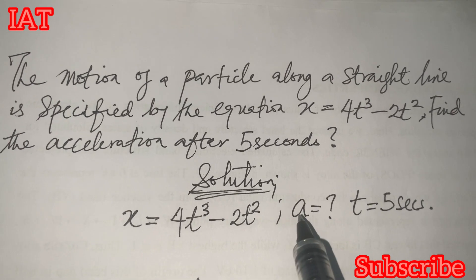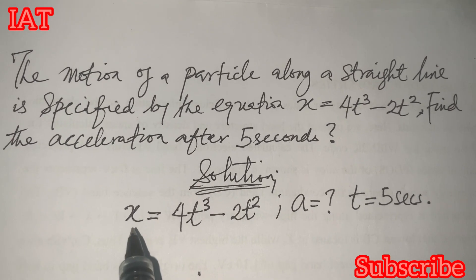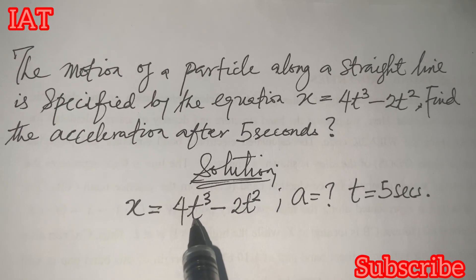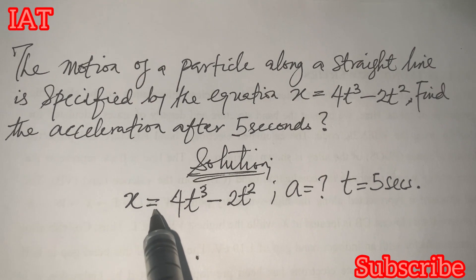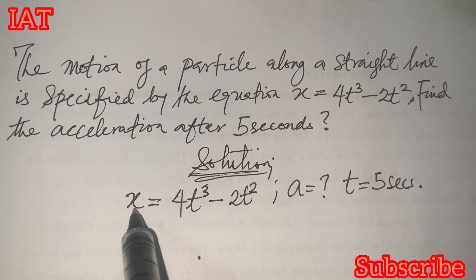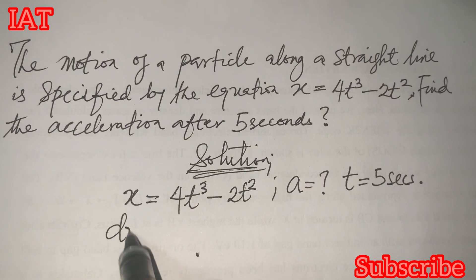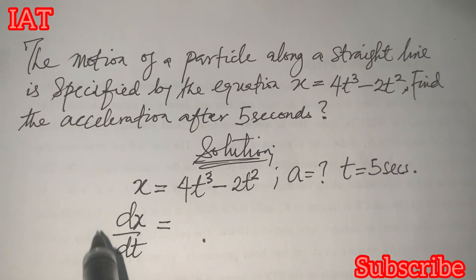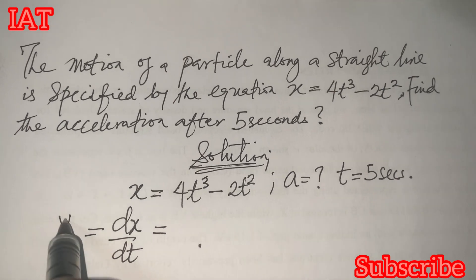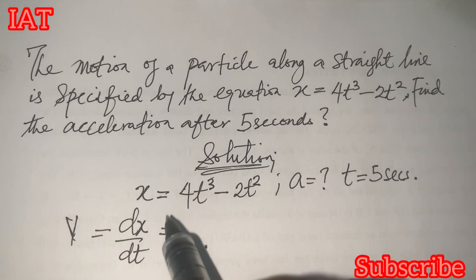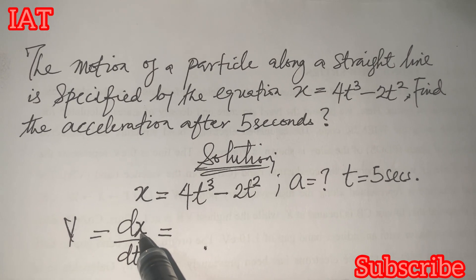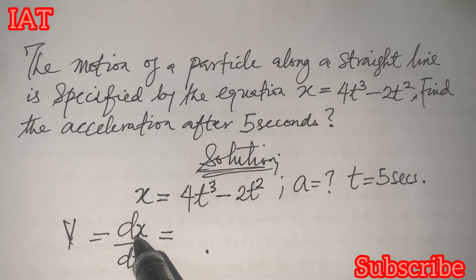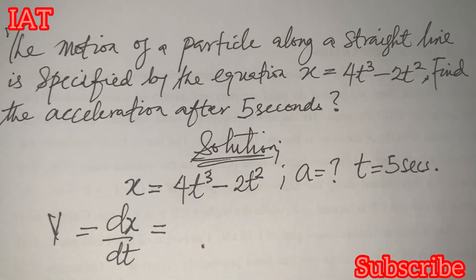That means, for us to get this acceleration, we need to take the second derivative of this x with respect to t. And for us to get the second derivative, it means we need to check for the first derivative. And the first derivative is dx over dt. And dx over dt is the same thing as velocity because velocity itself is a change in displacement. Or some cases can say it is a change in distance with respect to time.